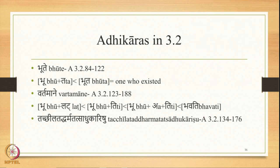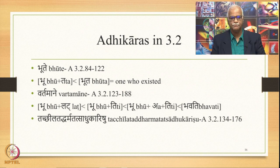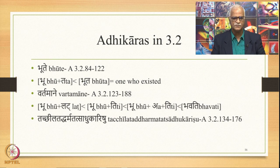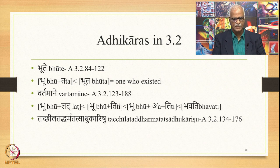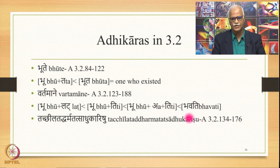The Adhikaras in 3.2 are these two. Bhute from 3.2.84 to 3.2.122: Bhu plus Ta — the suffix Ta is added in the sense of past tense — gives the form Bhuta, meaning 'one who existed'. Vartamane is another Adhikara meaning 'present condition', from 3.2.123 to 3.2.188. Bhu plus Lat: Lat is stated in the sense of present tense; Lat gets substituted by Ti and then A comes in between, and finally we get the form Bhavati, meaning 'he/she/it exists in the present tense'.